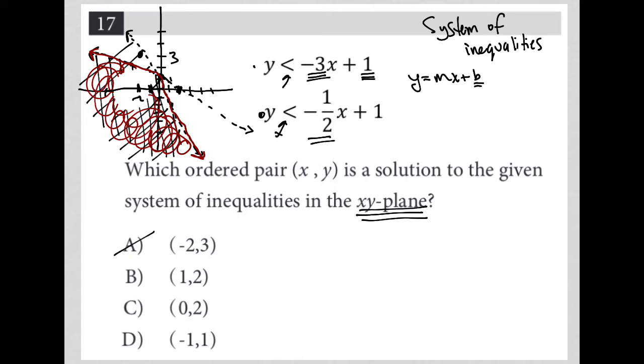Choice B, where is 1 comma 2? So this is 1. 2 is here, so 1 comma 2 is up there. That's also not in the overlap area. So B is gone. 0 comma 2 would be right here. So you see the value of having these points on your graph so you can see exactly where they are. That's also not in the overlap area, so it's gone. And then negative 1 comma 1, well, that looks like that would be exactly right there, which is definitely inside of this overlap area. So that makes choice D the best answer.